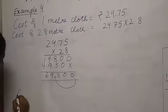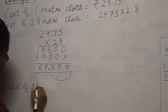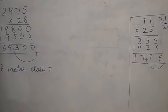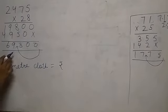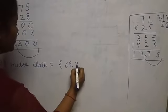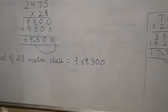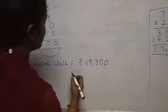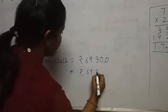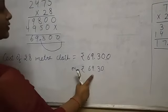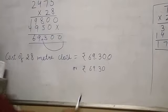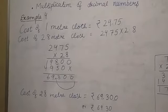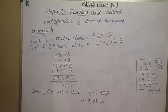Count three digits from the right-hand side: one, two, three. So the cost of 2.8 meters of cloth is ₹69.300, which we can also write as ₹69.30. Students, I hope the decimal placement part is clear to you. You will now be able to solve the questions in your exercise. Thank you, bye bye.